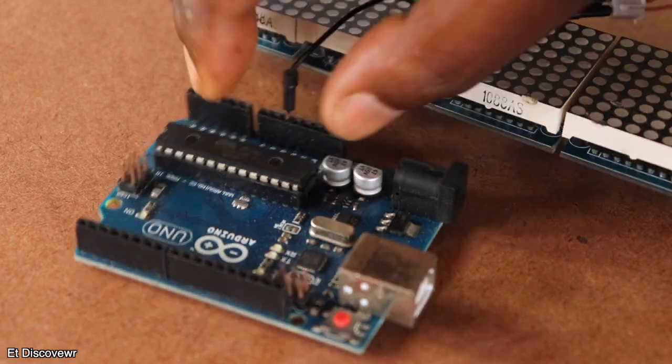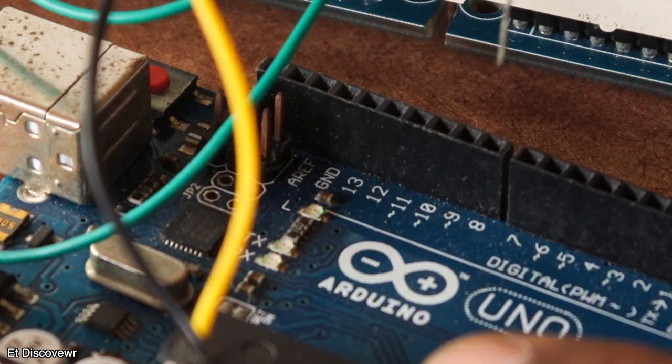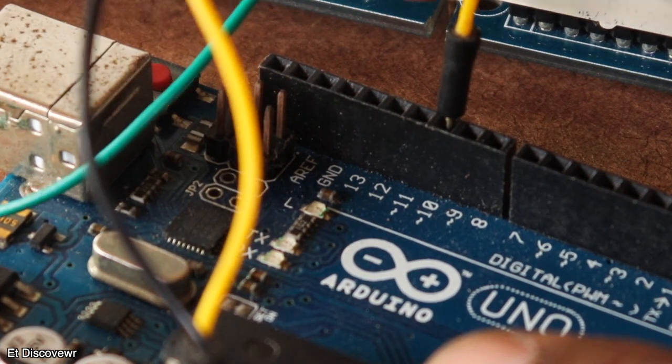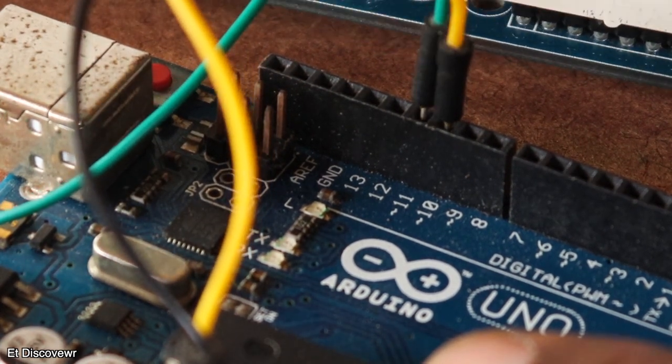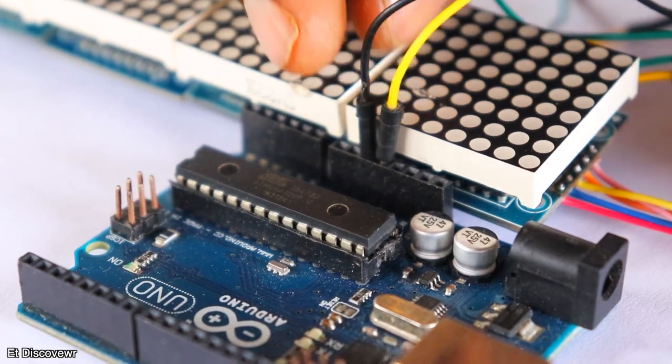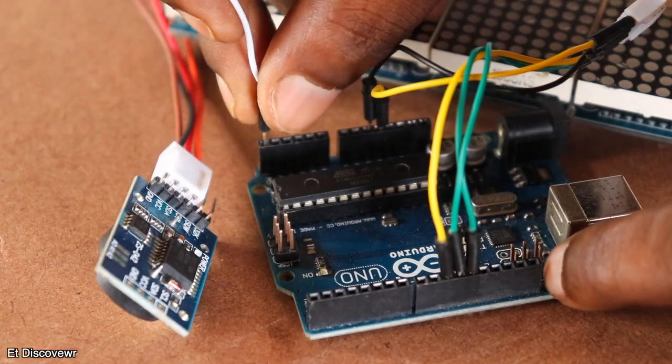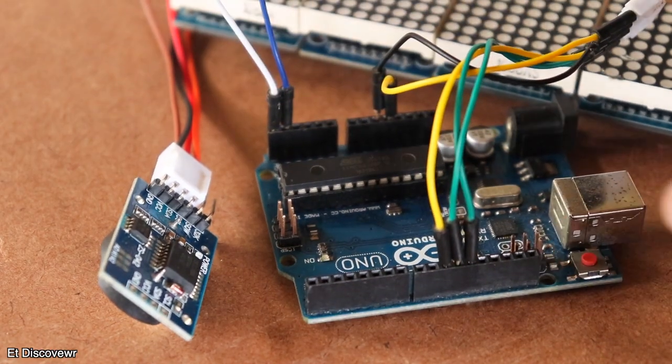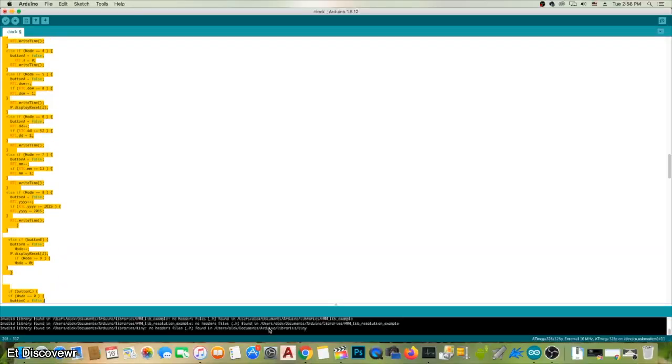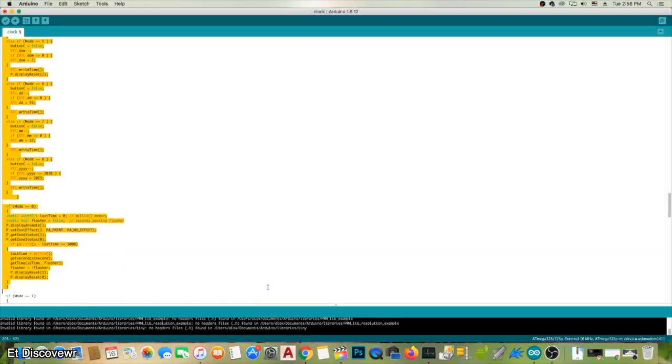First you need to connect 5V power source to this display. And then you need to connect the data input pin with Arduino digital pin 11, connect CS pin with digital pin 10, and clock pin with digital pin 13. And then you need to connect the SDA pin of this RTC module to analog pin 4, and the SCL pin to analog pin 5. Once all the connections are done I will connect the USB cable and upload my clock code. You will always get the code in the description box.